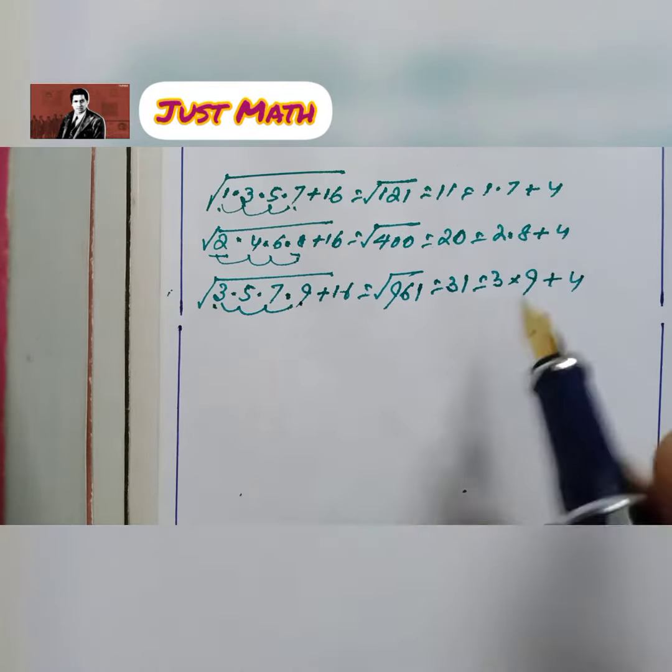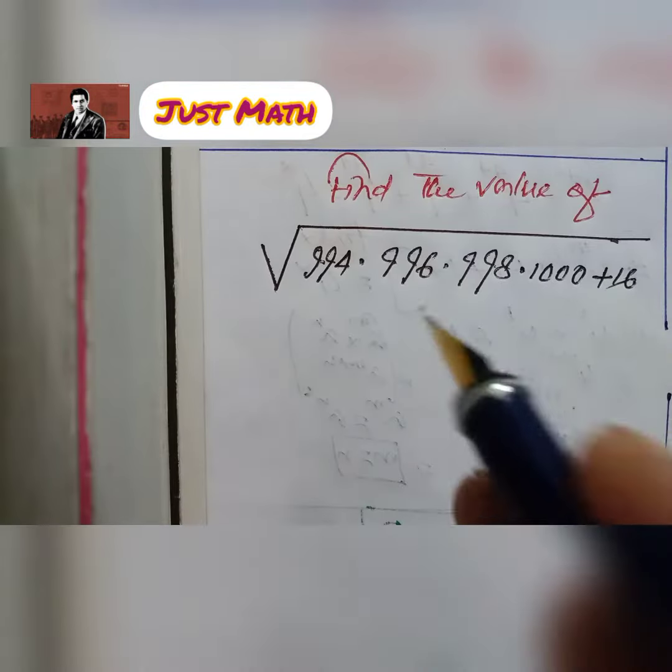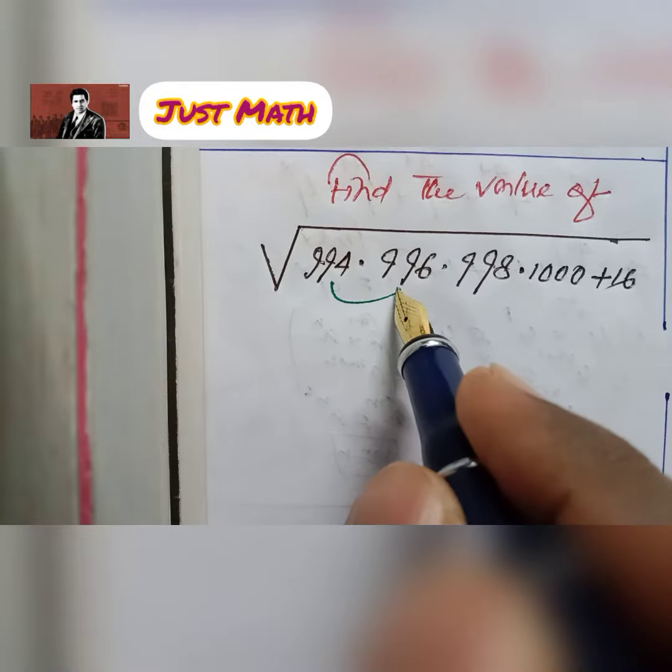First number multiply last number, 3 × 9 plus 4. Now here the difference is 2.